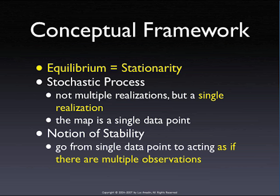The only way we can do this is if we assume so much structure that, in essence, it doesn't matter whether we see one realization of the pattern — which is the one that we have — or multiple realizations of the pattern. The essence of this is that we assume that the system is stable, so that we could think of multiple realizations. For all practical purposes, then, we treat this as consisting of multiple observations, even though it's just one.